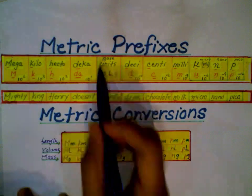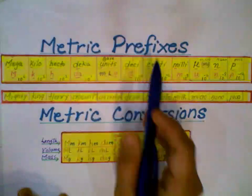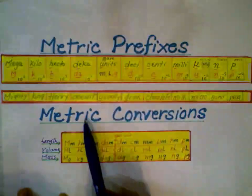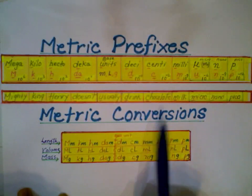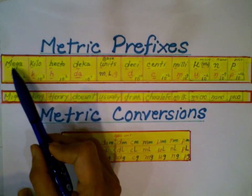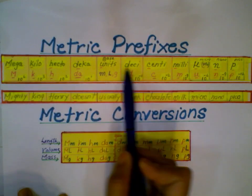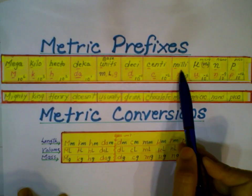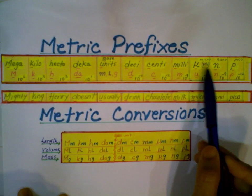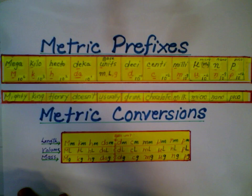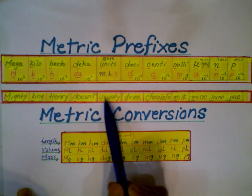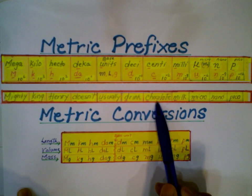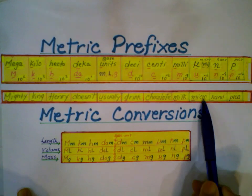This video is on metric prefixes and using these prefixes for metric conversions. The prefixes are: mega, kilo, hecto, deca, deci, centi, milli, micro, nano, pico. Here is the mnemonic: 'Mighty King Henry Doesn't Usually Drink Chocolate Milk Micro Nano Pico.'